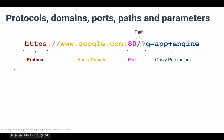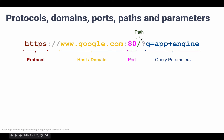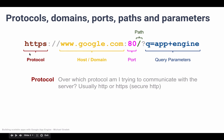This is an example of a perfectly valid URL that we could type into our browser: https://www.google.com and then a colon, forward slash, question mark, q equals app plus engine. So what is all of this?